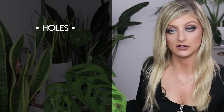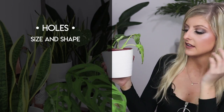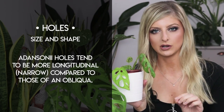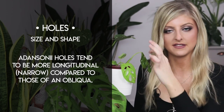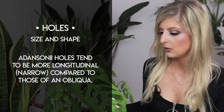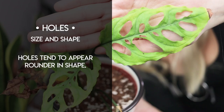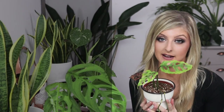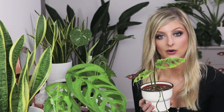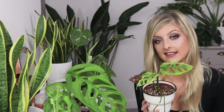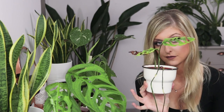The next difference is the holes on adansonii versus Monstera obliqua. On adansonii, the holes are much more longitudinal or narrower — generally speaking, they're very much like slits. Whereas on a Monstera obliqua, in ratio to the plant, the holes are much rounder in appearance. I'll touch on this briefly because the Muggle Plants article states that a real obliqua is 90% hole — but I want you to know that is only true for this particular form of obliqua.